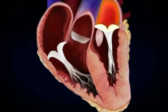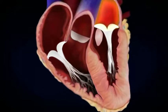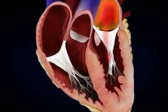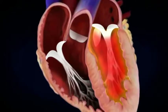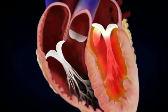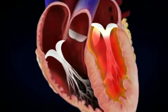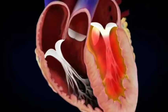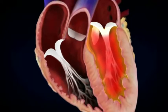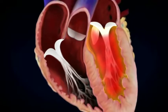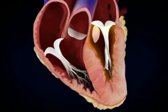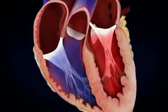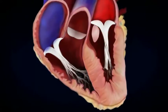After collecting the blood, the left atrium sends it to the left ventricle, which is the main pumping chamber of the heart. The left ventricle is responsible for pumping the blood through the aorta and out to all of your organs and tissues.